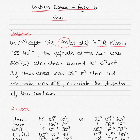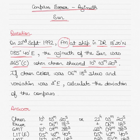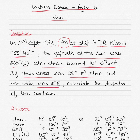The DR position is 85 degrees 40 minutes East. The azimuth of the Sun was 265 degrees compass, and the chronometer showed a time of 10 hours 03 minutes 20 seconds. The chronometer error was 6 minutes 18 seconds slow, and the variation was 2 degrees East. We need to calculate the deviation of the compass.